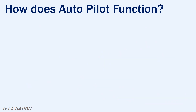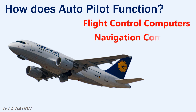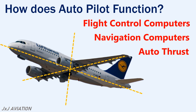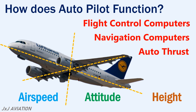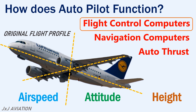In bigger aircraft, the autopilot will be coupled with the flight control computers, the navigation computers, and even with the autothrust system. The autopilot is responsible for keeping the aircraft stable on all three axes in case of any disturbances during flight. It will detect a disturbance based on changes in airspeed, attitude, or the height of the aircraft. The autopilot will take corrective action and bring the aircraft back to its original flight profile by sending information to different flight control computers.